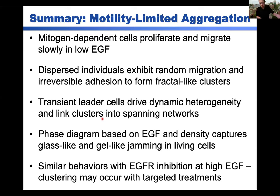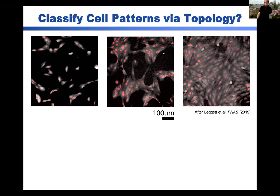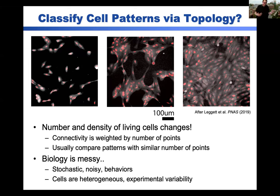We have lots of different cellular patterns at different densities. Let's come back to the topology story. Can we use the organization of these points to train a computer to recognize these different experimental regimes? I talked about using discrete points to sample this low-dimensional manifold. We can obviously tell the difference between individual cells, clusters, and confluency, but there are nuances: typically when we do these measurements you have the same number of particles, and the spatial connectivity is weighted by the number of points. It's not clear how to correct for this with very different numbers of cells in each snapshot. And biology is messy — it's stochastic, noisy, with heterogeneous cells and lots of experimental variability. So we said: let's just try this and see if it works.